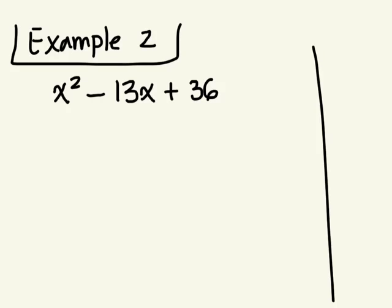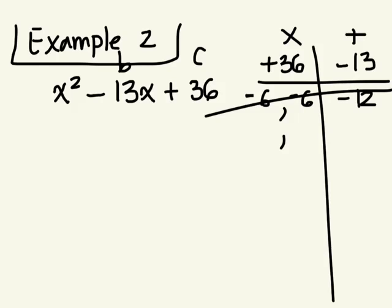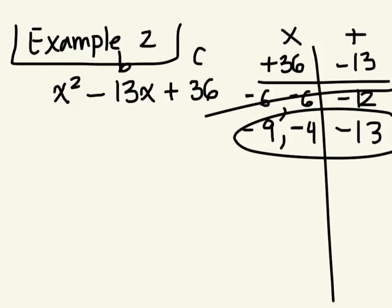Now you can look for clues in the question. We're looking for two things that multiply together to give us positive 36 — it's always your C — and that add up to B, which is negative 13. If it has to add up to negative 13, think about this: both factors have to be negative. 6 times 6 is 36, but does negative 6 plus negative 6 add to negative 13? No. Negative 9 and negative 4: 9 times 4 is 36. Negative 9 plus negative 4 is negative 13. That works!